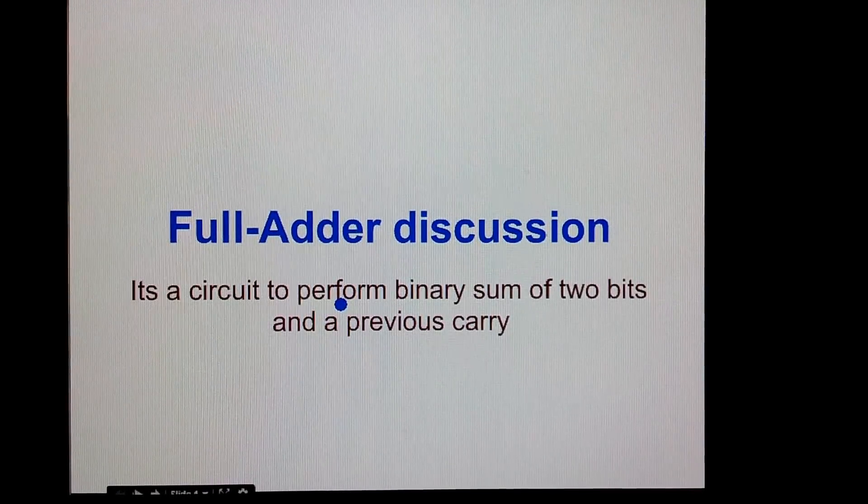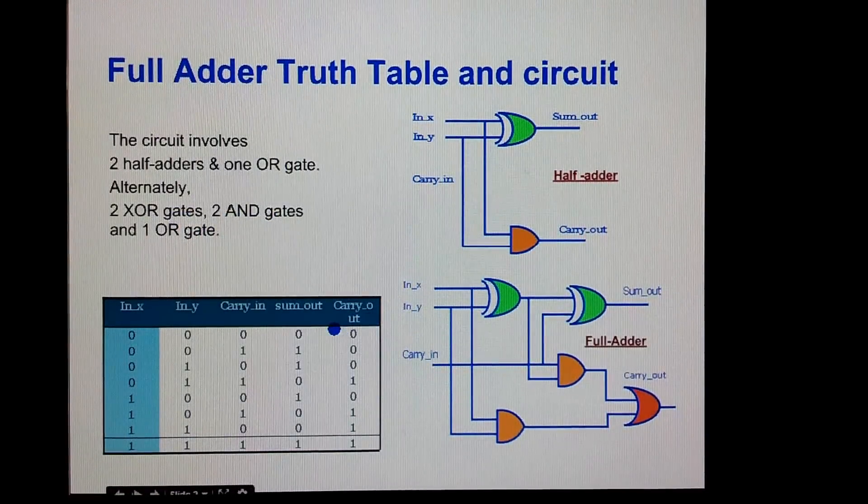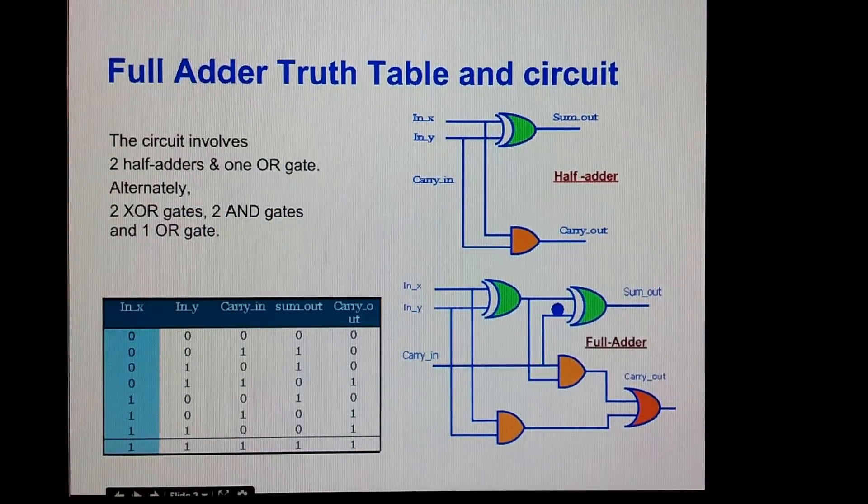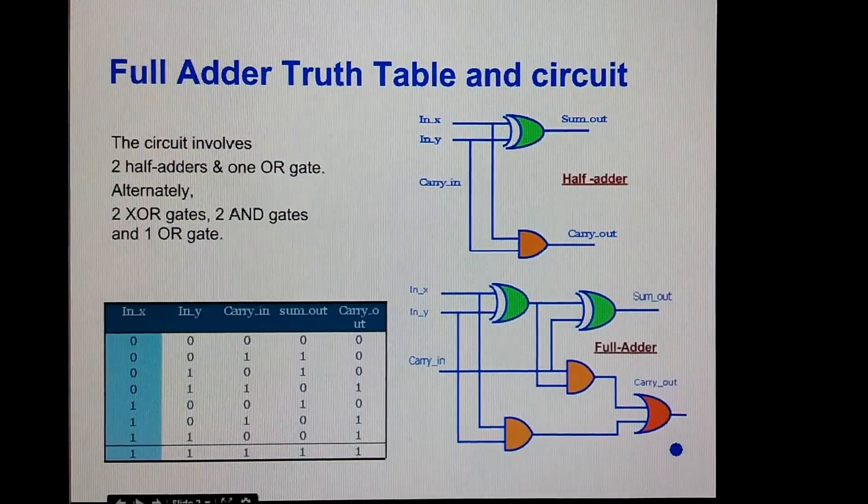So basically we have three inputs. The circuit and truth table for the full adder is shown here. The full adder consists of two XOR gates, two AND gates, and one OR gate.